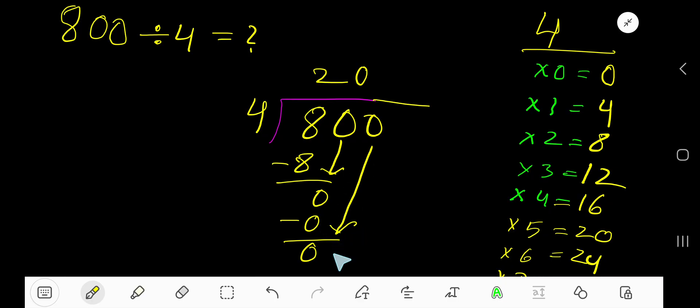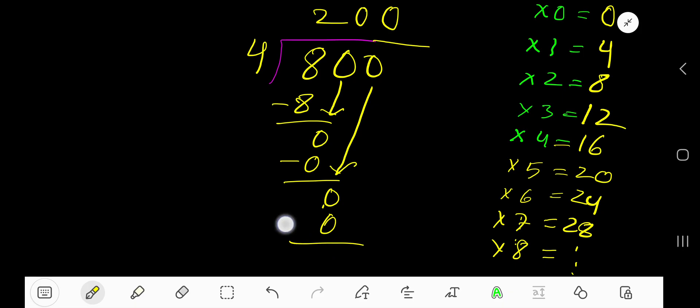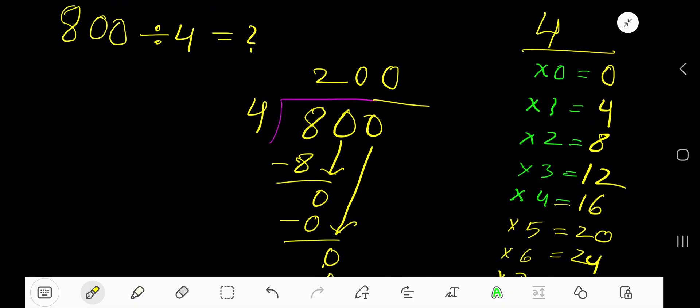Bring down this 0. How many times? 4 goes into this 0, 0 times, right? 0. 0 times 4, 0. To subtract you are getting 0. Since your remainder is 0, you are done. So 200 is your answer.